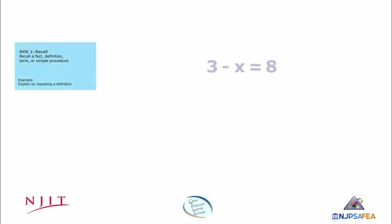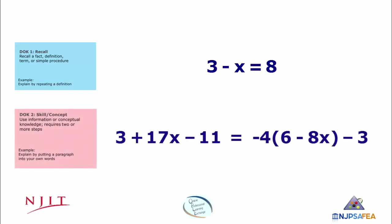Imagine a school in which some classes only expect students to solve DOK Level 1 equations, like the first example, and other classes expect students to solve Level 2 equations, like the second example. Students in these different classes would not be receiving the same education because the expectations of student learning are not the same. This is why collaboration and dialogue within a PLC is at the heart of the CAR process. Within a school, teachers should have a common understanding of what they expect students to know and do. An important component of building this common understanding is determining the DOK levels together in the PLC.